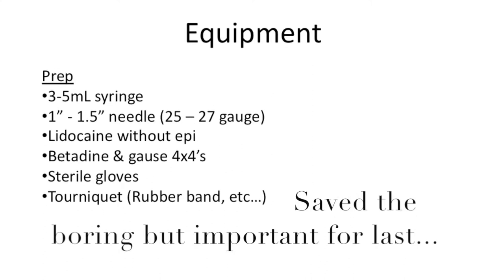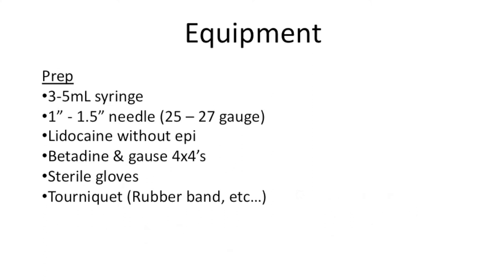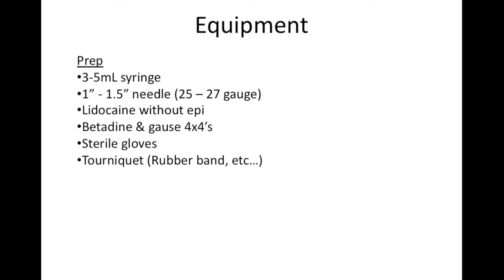For your equipment, you need to prep and perform a nerve block first. You'll need a 3 to 5 mL syringe with lidocaine without epinephrine, and a needle that's at least an inch long — preferably 27 gauge, though 25 gauge works too. You'll also need betadine, gauze swabs, sterile gloves, and a tourniquet, which can be anything from a formal tourniquet to a rubber band, finger of a glove, or Penrose drain.